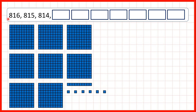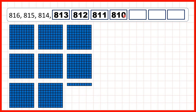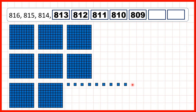Now we start with eight hundred and sixteen, so we have eight hundreds, one ten, and six ones. We can continue counting back until we get to eight hundred and ten, but then to take one away, we need to exchange our ten for ten ones. Then when we take one away, we get eight hundred and nine, because we now have eight hundreds, zero tens, and nine ones.